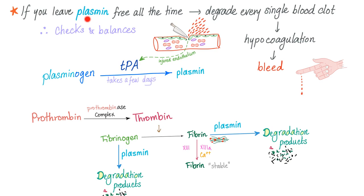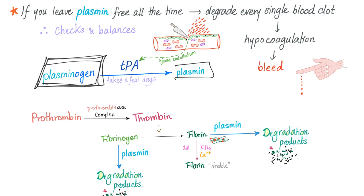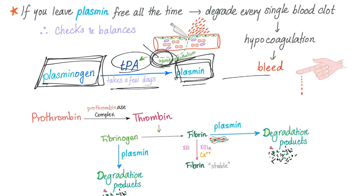Because power corrupts absolutely, please don't leave plasmin free — otherwise it will degrade every single blood clot, leading to bleeding. We need checks and balances. Let's put this plasmin in an inactivated precursor form called plasminogen. For plasminogen to be converted into plasmin, we need TPA, which comes from the injured endothelium — not the normal — because we need evidence of injury to make a crucial decision like this. Because plasmin is dangerous, and this conversion takes a few days, which is good because we need the clot to do its job and stop the bleeding.